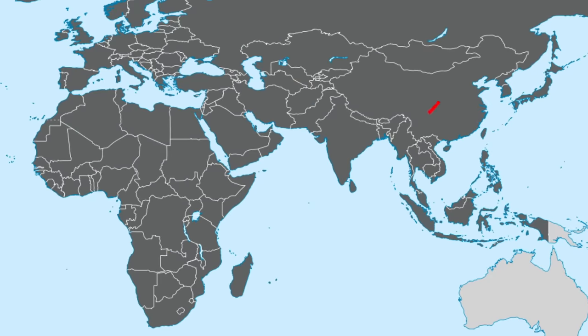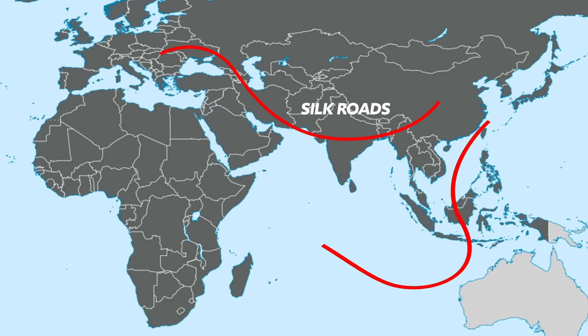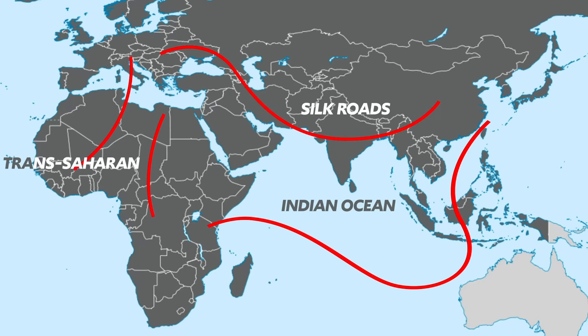What were the similarities and differences in the different networks of exchange in the period 1200 to 1450? The major trade routes you need to know are the Silk Roads, the Indian Ocean routes, and the Trans-Saharan network. The Silk Roads connected China to Europe while passing through Central Asia and Southwest Asia. The Indian Ocean network connected East Asia with East Africa, with Southeast Asia, South Asia, and Southwest Asia in between. The Trans-Saharan routes connected North Africa and the Mediterranean Basin with Sub-Saharan Africa.